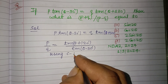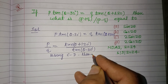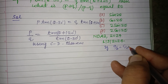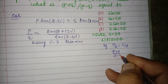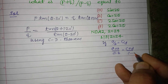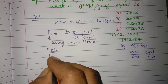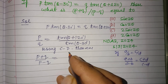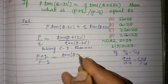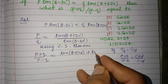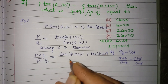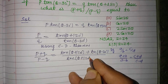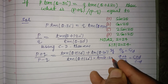Using the componendo-dividendo (CD) rule: if a/b = c/d, then (a+b)/(a-b) = (c+d)/(c-d). Therefore, (p+q)/(p-q) = [tan(θ+120) + tan(θ-30)] / [tan(θ+120) - tan(θ-30)].